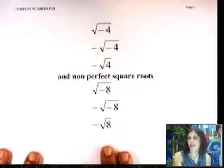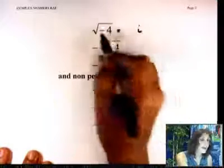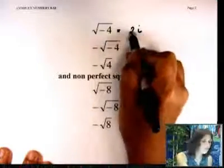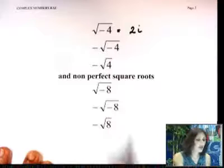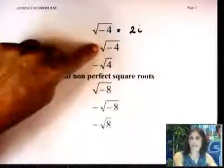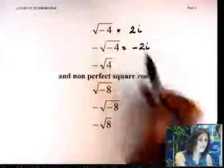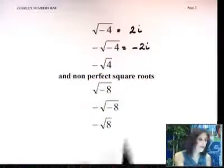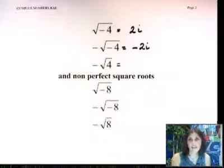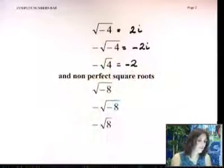So if you remember that, look how you can do this. Square root of negative 4: the negative portion is going to give you the i, and square root of 4 will give you the 2. Let's do this one. Square root of negative 4 with a negative in front of it — square root of negative 4 is 2i, and then you have a negative in front of it.